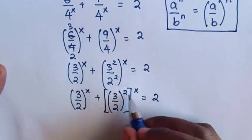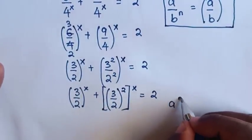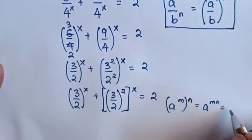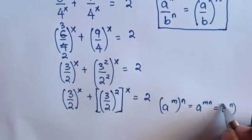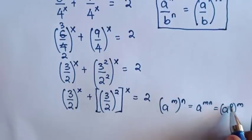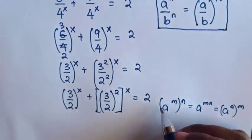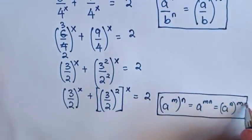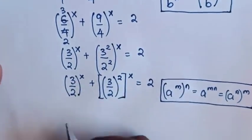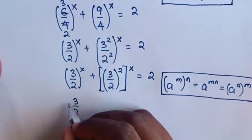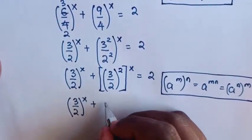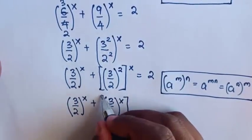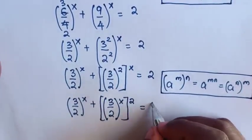We apply the rule: a power of m, bracket power of n, is equal to a power of n, bracket power of m. So we exchange the powers. In the equation, it will be 3 over 2 bracket power of x, plus 3 over 2 bracket power of x, inside the bracket, bracket power of 2, is equal to 2.